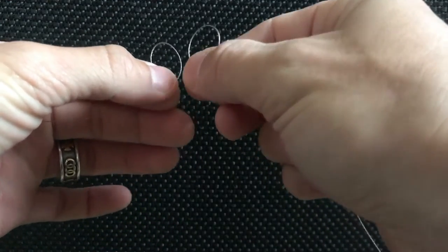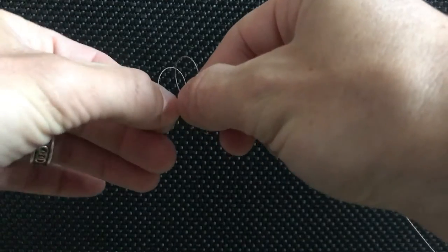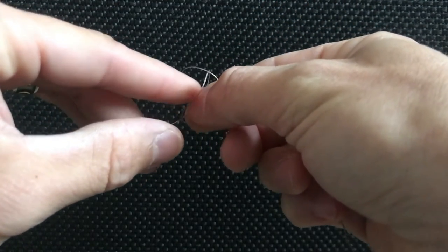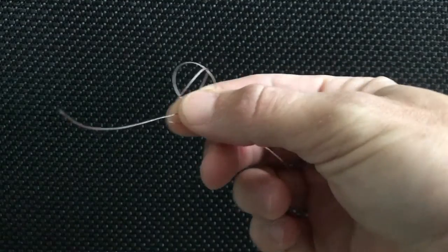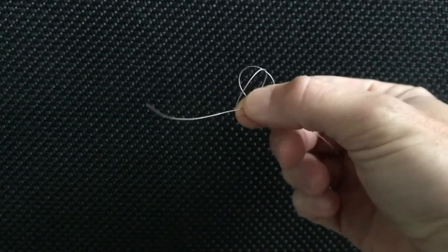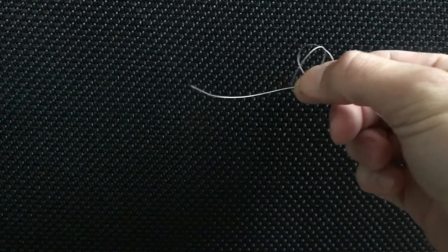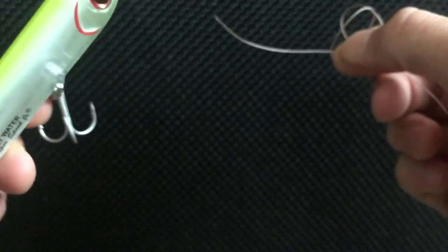Then you're going to take your right loop and go through that left loop just a little bit and pinch it right there. So you have what looks like that.